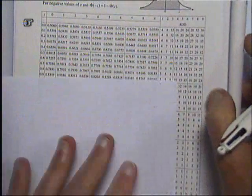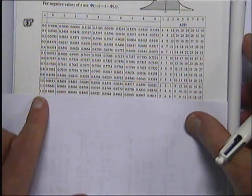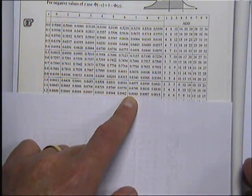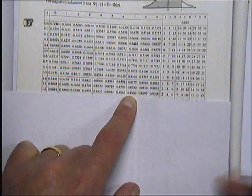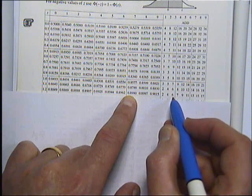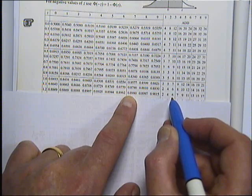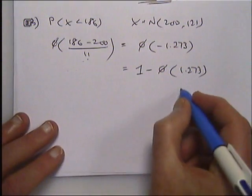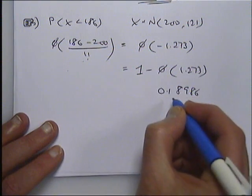So we've got to look up phi of 1.273. Start with 1.2, which is here, 1.27 I'm getting 0.8980, and the 3 has got a 6 on here which I've got to add on, so it's going to be 0.8986.